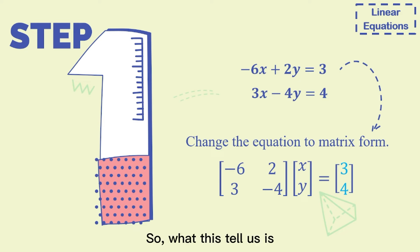So what this tells us is that a1 is -6, a2 is 3, b1 is 2, b2 is -4, c1 is 3, and c2 is 4.